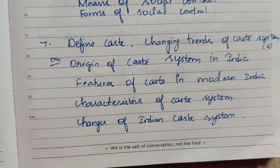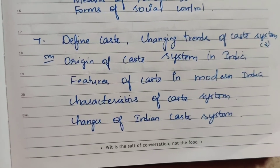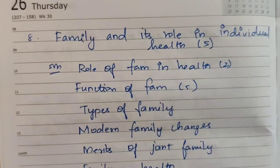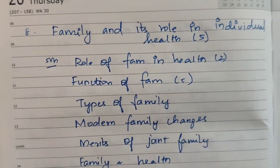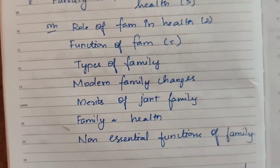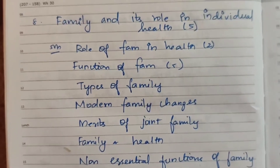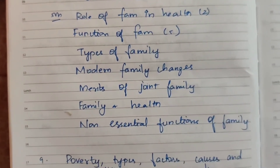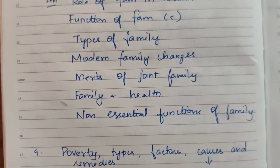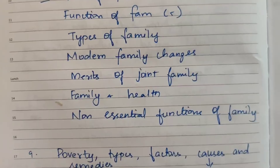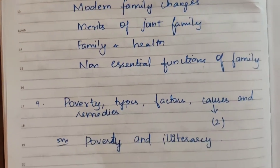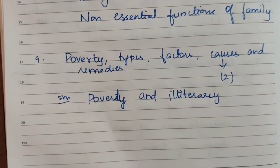Eighth question: Family and its role in individual health — asked 5 times for 15 marks and 5 marks. Role of family in health asked 2 times. Functions of family asked 5 times. Types of family, modern family changes, merits of joint family, and family and health are all subtopics asked.